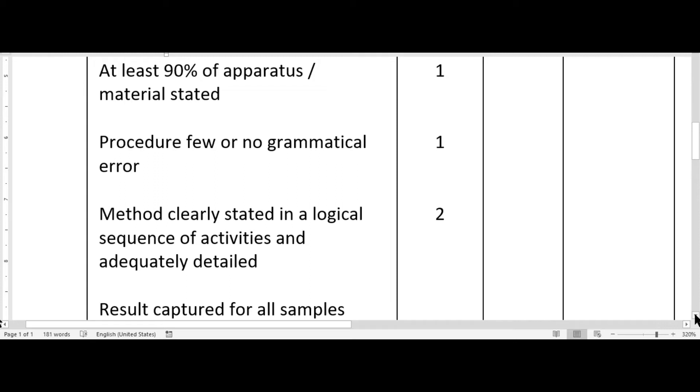Now your method should be clearly stated and that's the procedure. It must be clearly stated in a logical sequence of activity and of course adequate detail provided. Please be reminded that you should not add observation to your procedure neither should you do any discussion in your procedure. You want just to state the steps that are supposed to be taken in the lab for successful execution.